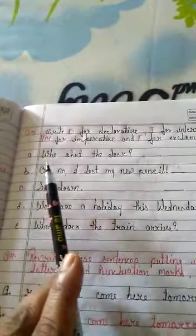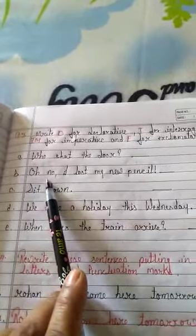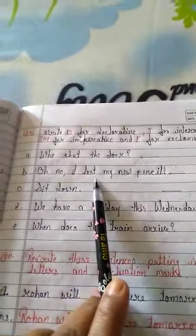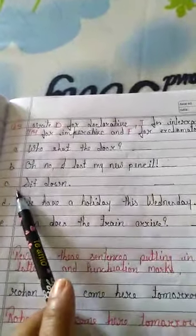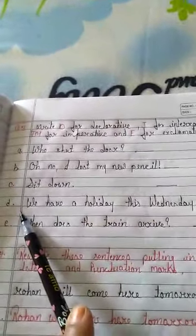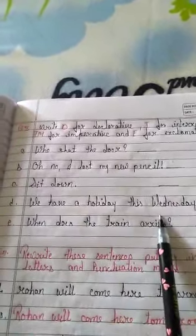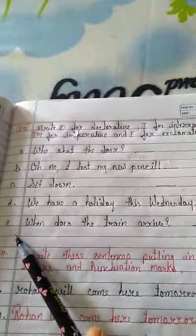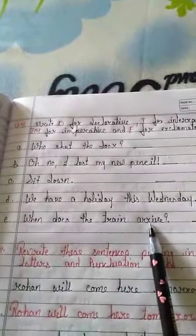The sentences are: A) Who shut the door? B) Oh no, I lost my new pencil! C) Sit down. D) We have a holiday this Wednesday. E) When does the train arrive?